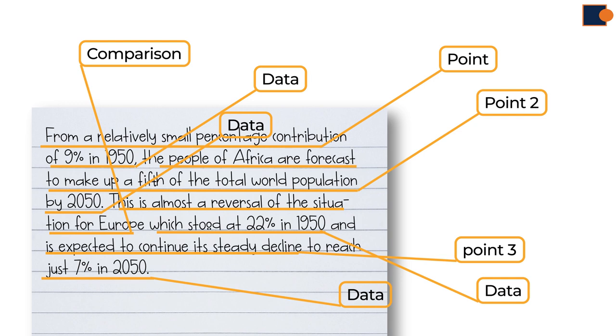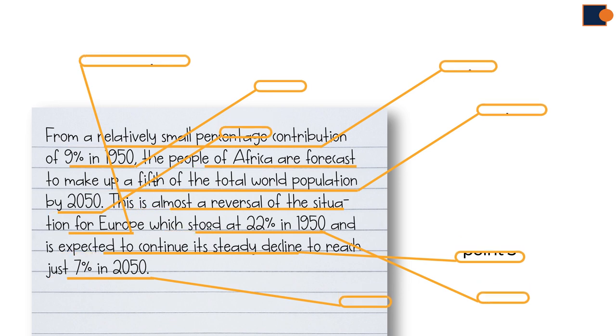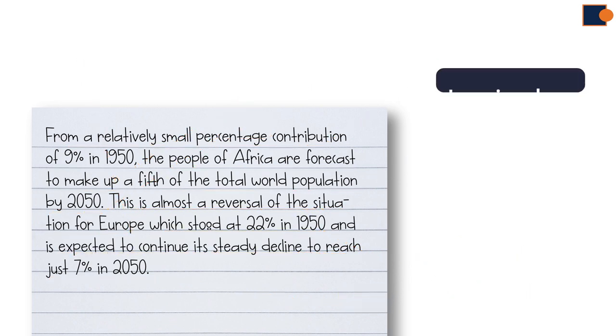So, to sum up, if you notice, details are written in the following pattern. Point, supporting data, comparison, supporting data, point, and again supporting data. This way of writing can give you better score for task achievement part.